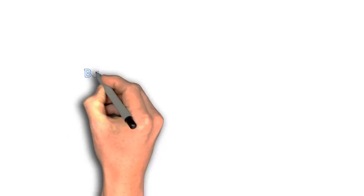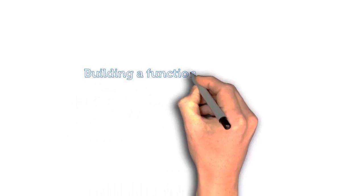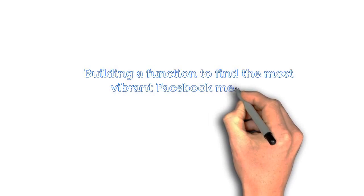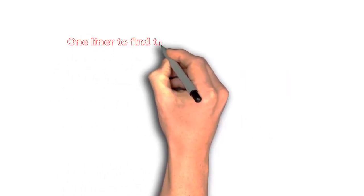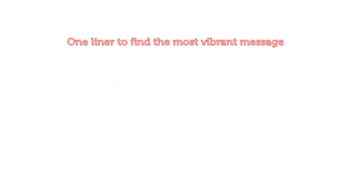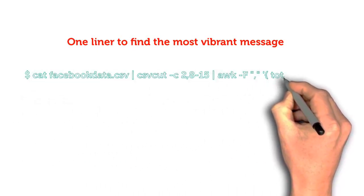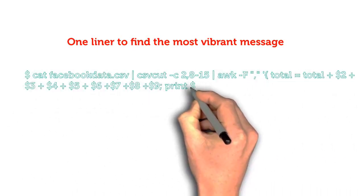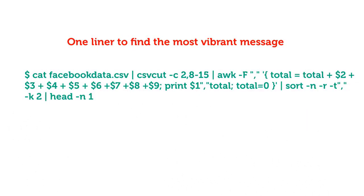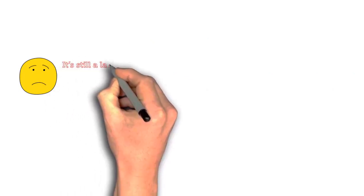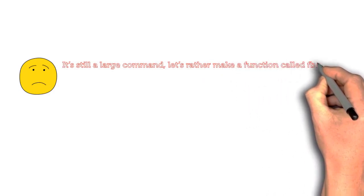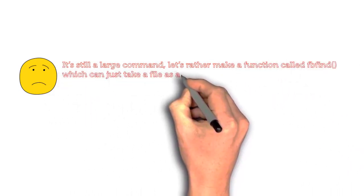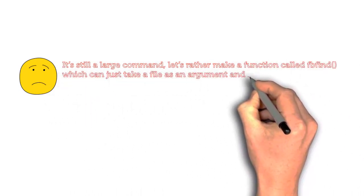We are using a function to find the most vibrant Facebook message. However, we want to make it more interesting. Let's efficiently pipe all the steps shown in the previous lesson into a single command and find the message as follows. It's still a large command, so let's make a function called fbfind, which can just take a file as an argument and spell out the most popular message for us.